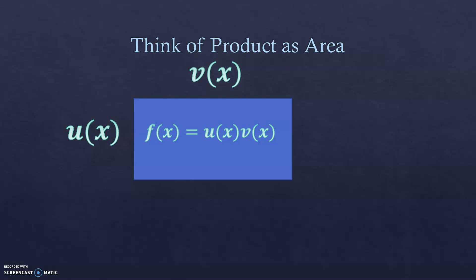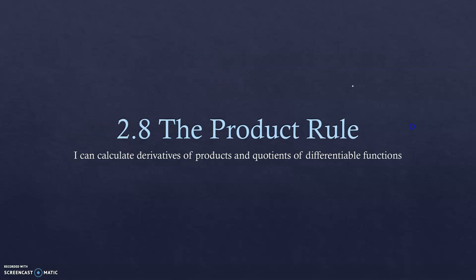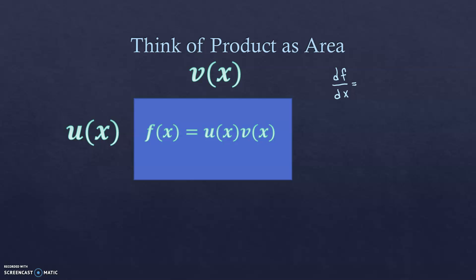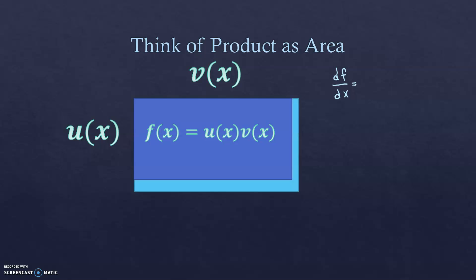We're going to think about a product as area. There's a rectangle where one dimension is u(x) and the other is v(x). Multiplying them gives the area of the rectangle, which equals f(x). The question is: if we change x by a tiny bit, how much does f change? That additional area represents how much f changed.